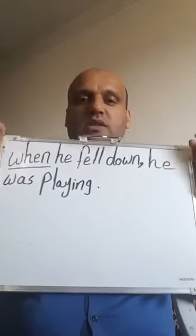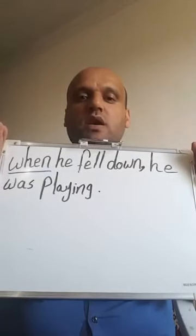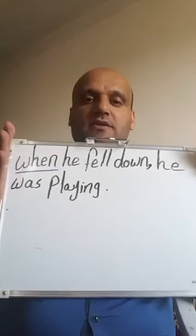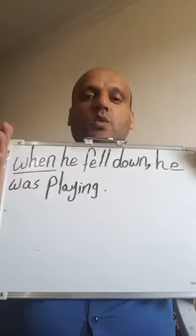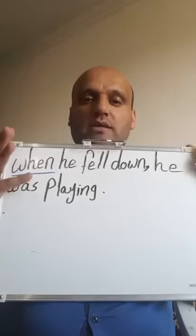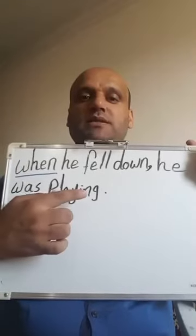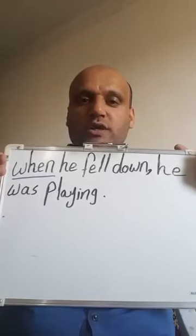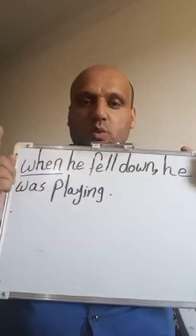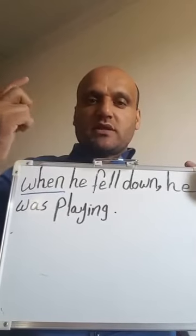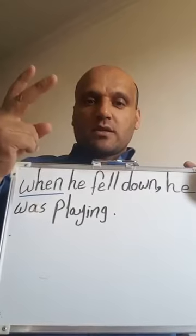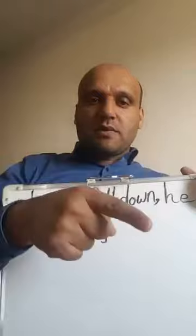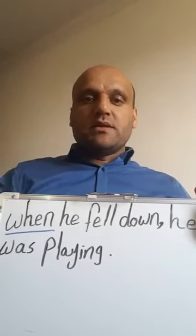Now let's look at the word 'when.' The sentence is: 'When he fell down, he was playing.' After 'when,' I use past simple: 'when he fell down.' Then past continuous follows: 'he was playing.' So after 'when,' the tense is past simple, then past continuous. To summarize: use 'while' with past continuous then past simple; use 'when' with past simple then past continuous.